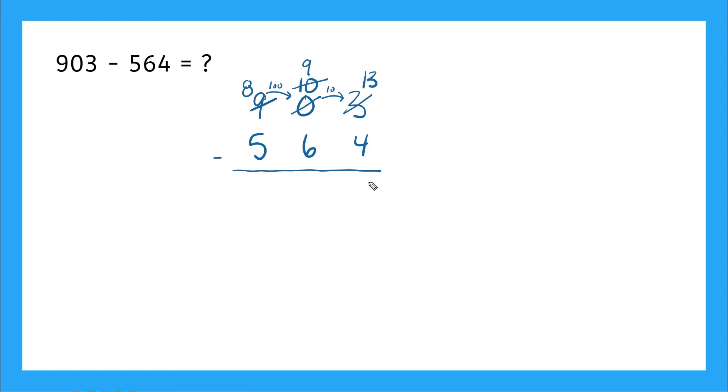And 13 minus four, that's nine, nine minus six, that is three and eight minus five, that is also three. So our answer is 339. Good job.